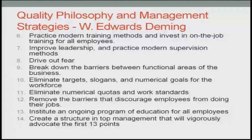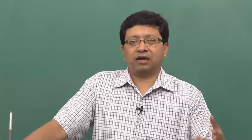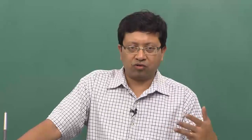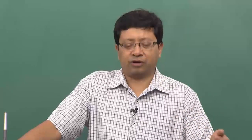Ninth: break down the barriers between functional areas of business. Any improvement happening on shop floor one should have that information available on shop floor two so that people can interact with each other and utilize the concept of learning to improve quality. This permeability should be such that the information flow and knowledge flow allow people to inculcate these ideas and utilize them to improve overall quality for products and services.